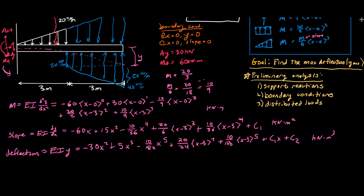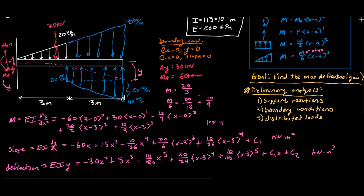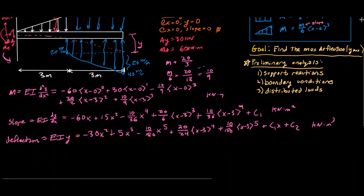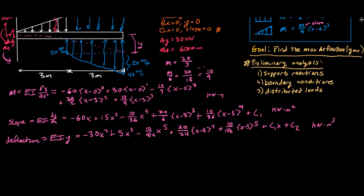Now we need to find our constants using our boundary conditions. At x equals zero, y equals zero, and at x equals zero, the slope equals zero. Starting with the slope equation - I have one less constant there. Plugging in slope equals zero and x equals zero: everything goes to zero, so C₁ equals zero. Doing the same with the deflection boundary condition - at x equals zero, y equals zero - everything goes to zero, giving C₂ equals zero. Finding the boundary conditions really isn't too bad in this case.